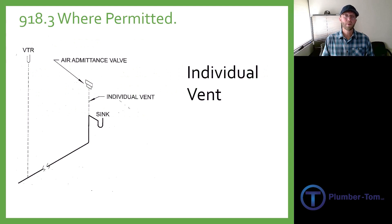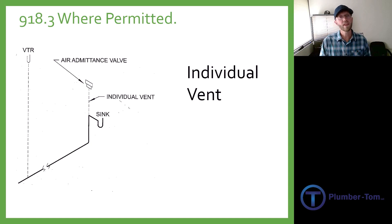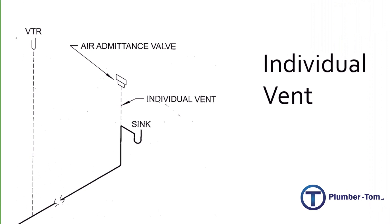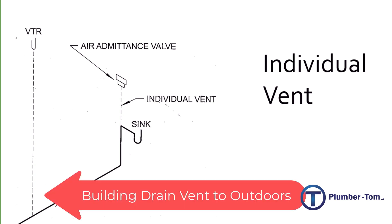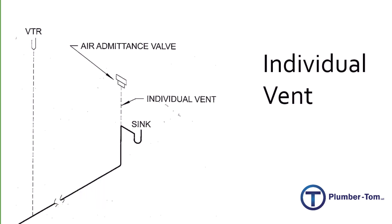918.3 talks about where we can install an air admittance valve, and you'll find that you can install it to any of the methods of venting we have discussed, starting with the individual vent — you can simply put an auto vent under or near a sink. As we go through these diagrams, please notice that every single diagram is going to show the building drain and a vent through the roof. You will always need at least one vent from the building drain to open air somewhere, even if you're using air admittance valves.